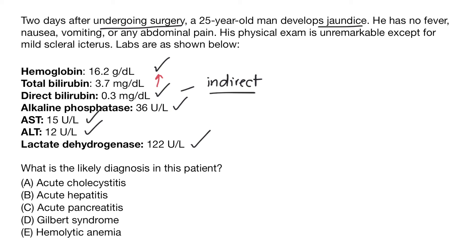You might think an intrahepatic cause is left, but if we look at the bilirubin, we have an indirect hyperbilirubinemia. We have a young male who is otherwise healthy, recently underwent surgery as a stressor, and has no other symptoms with a normal exam. This question is referring to Gilbert syndrome, where you have decreased UDP-glucuronosyltransferase activity, impairing the liver's ability to conjugate bilirubin appropriately, leading to hyperbilirubinemia. The correct answer choice is C. Note that AST and ALT are also normal, which is typically not what you'd see in an intrahepatic cause of jaundice.